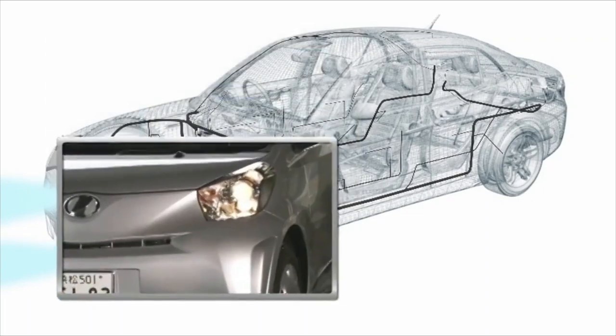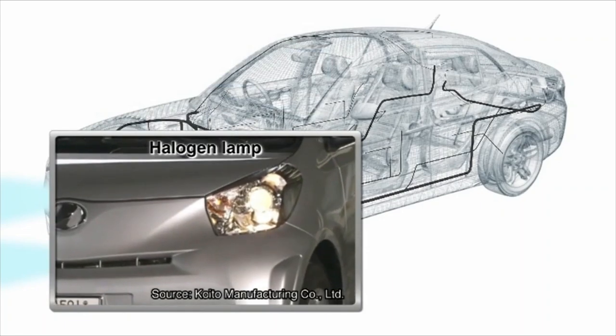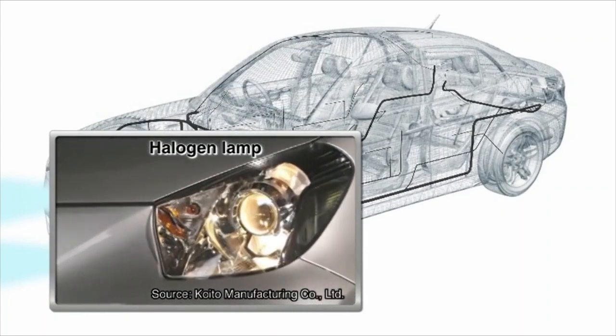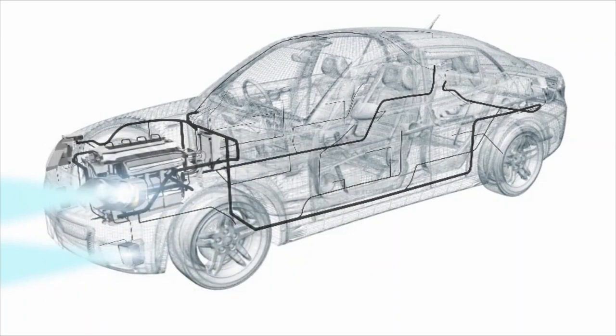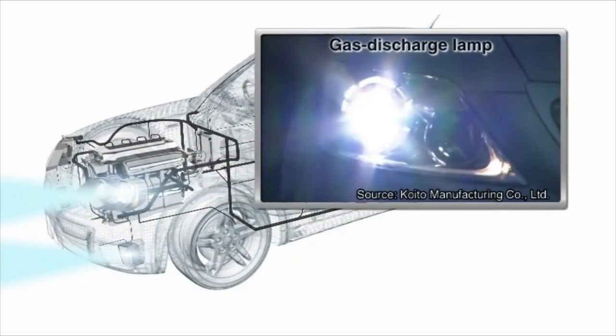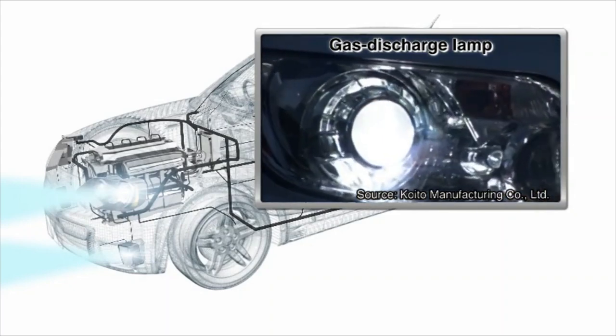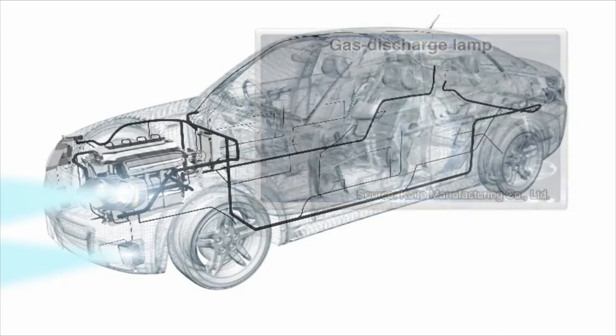A halogen lamp has a tungsten filament that is sealed into an envelope filled with pressurized halogen gas. Instead of filaments, an electronically controlled gas discharge lamp contains two electrodes that are sealed with ionized gas like xenon.